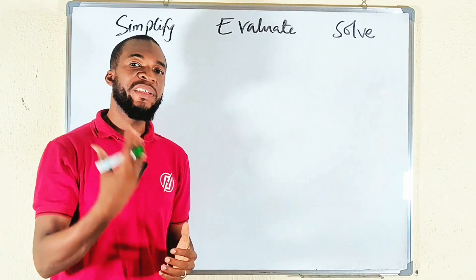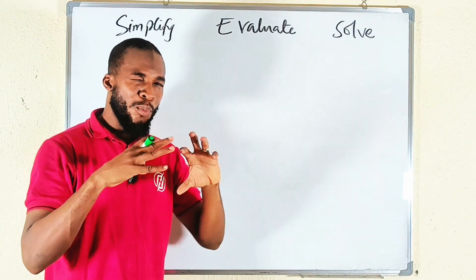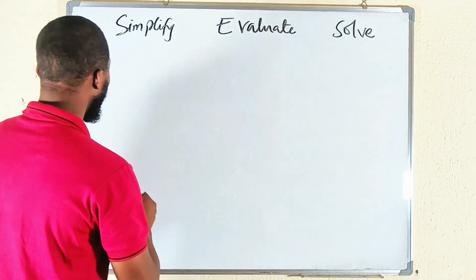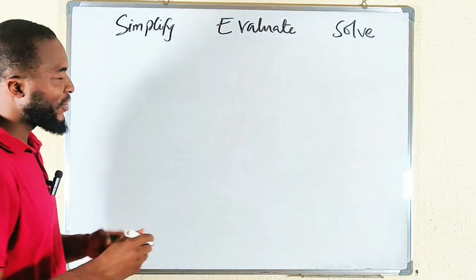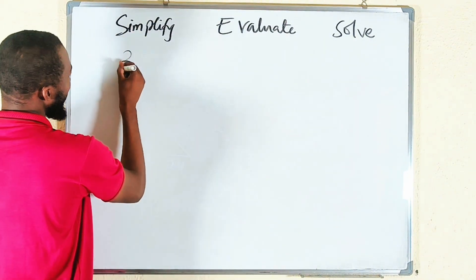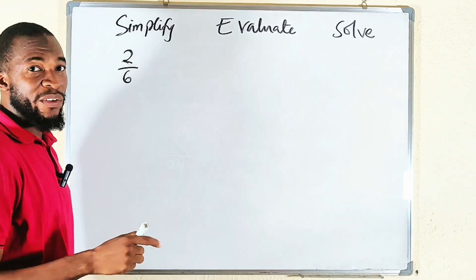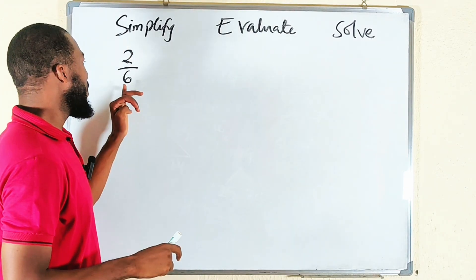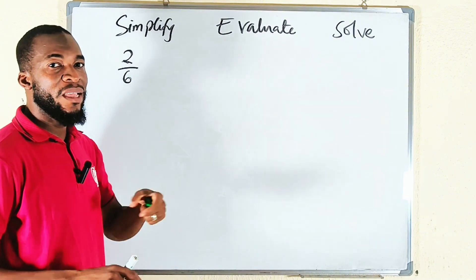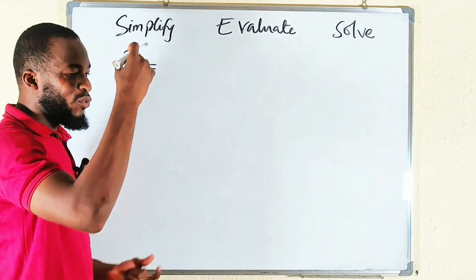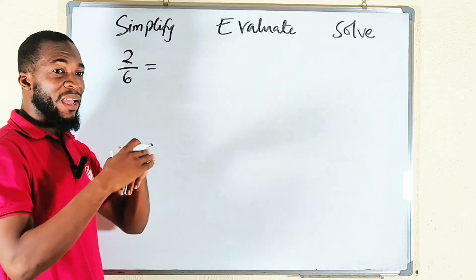For example, let's start with fractions. If I have 2 divided by 6, if my teacher gave me this to simplify, he is expecting me to write this in its simplest form. We are going to reduce it to an extent where it can no longer be broken down.